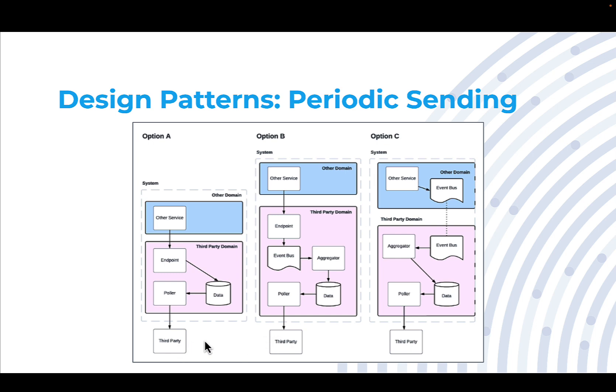The first option of dealing with this in periodic sending: we're having some other domain call an endpoint saying hey, this is data that needs to go out to the third party domain. That endpoint writes that to some sort of queue or data persistence that we then have a poller pick up and then send out to the third party, assuming it's available. If it's not, no problem, we just pick up where we left off.